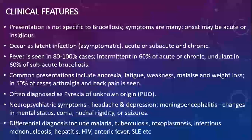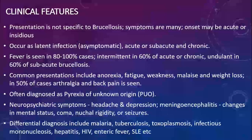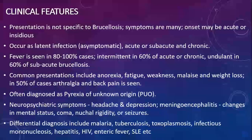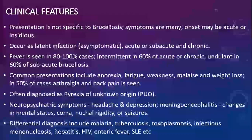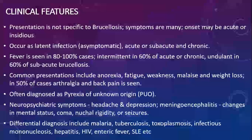In 50% of cases there is arthralgia — pain in the joints and back pain — and musculoskeletal conditions are very frequent. Often, brucellosis is diagnosed when investigated for fever of unknown origin. When the CNS is involved, neuropsychiatric symptoms such as headache and depression, meningoencephalitis, changes in mental status, coma, nuchal rigidity, and seizures may be seen, as it can also cause meningitis.